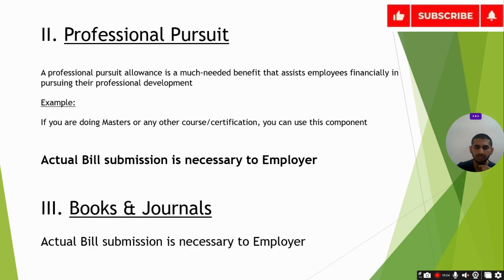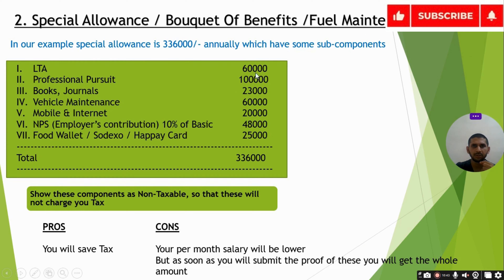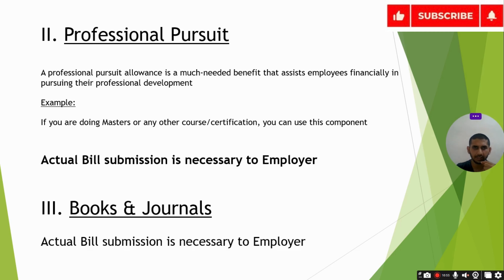The next sub-component is Professional Pursuit and Books & Journals — some organizations provide this. If your organization gives it, you can do any kind of masters, course, or certification and submit the printed GST bill to your employer. The amount will be paid to you as a lump sum, and temporarily your monthly salary will be slightly lower; over the year the subscribed amount comes to you completely tax-free.